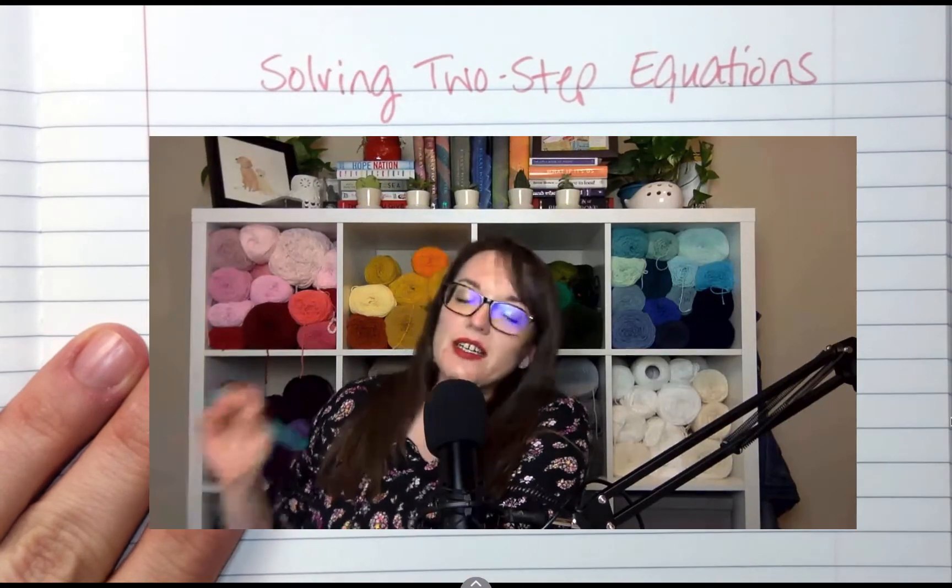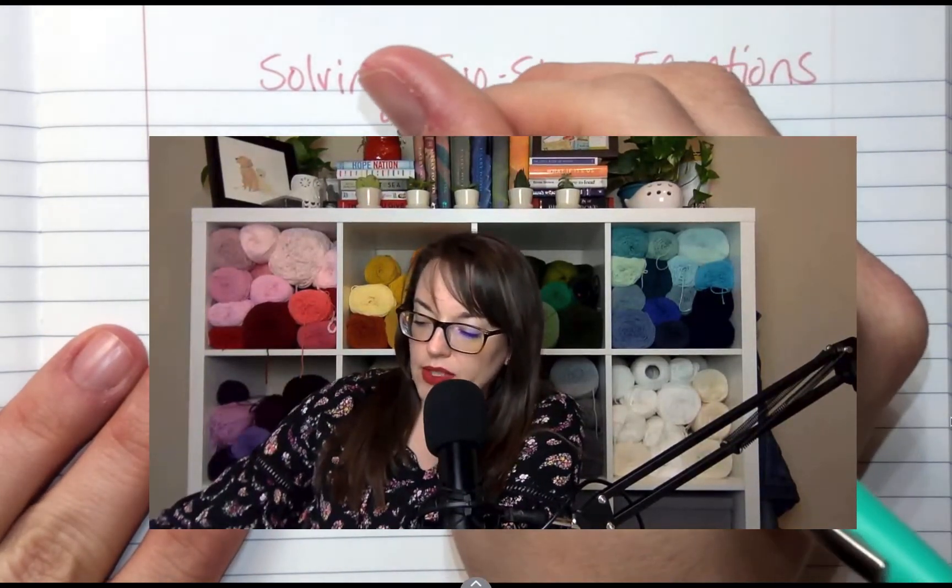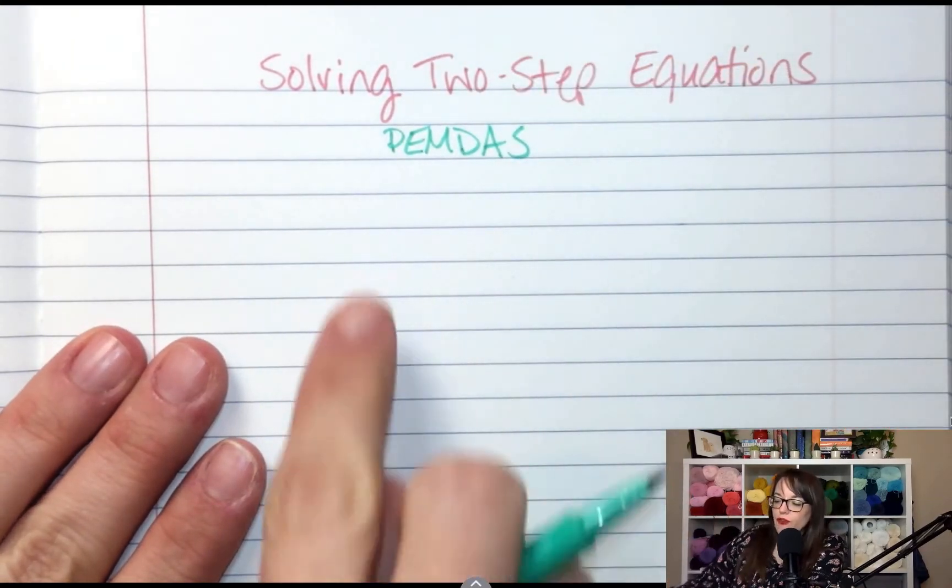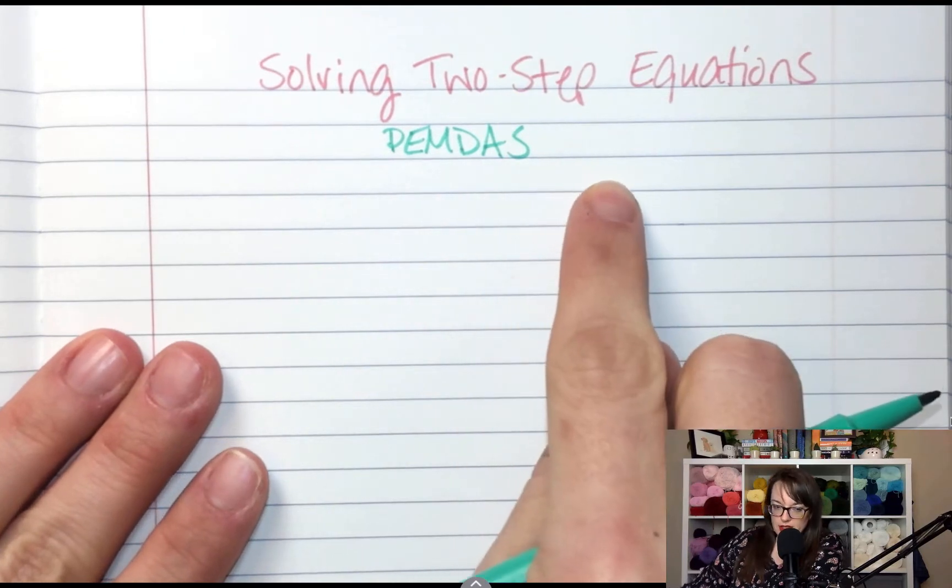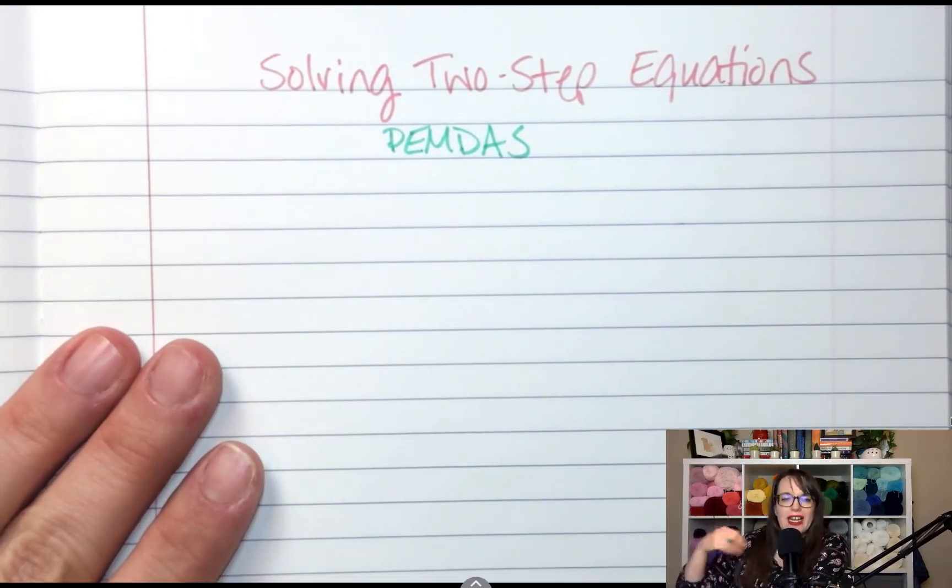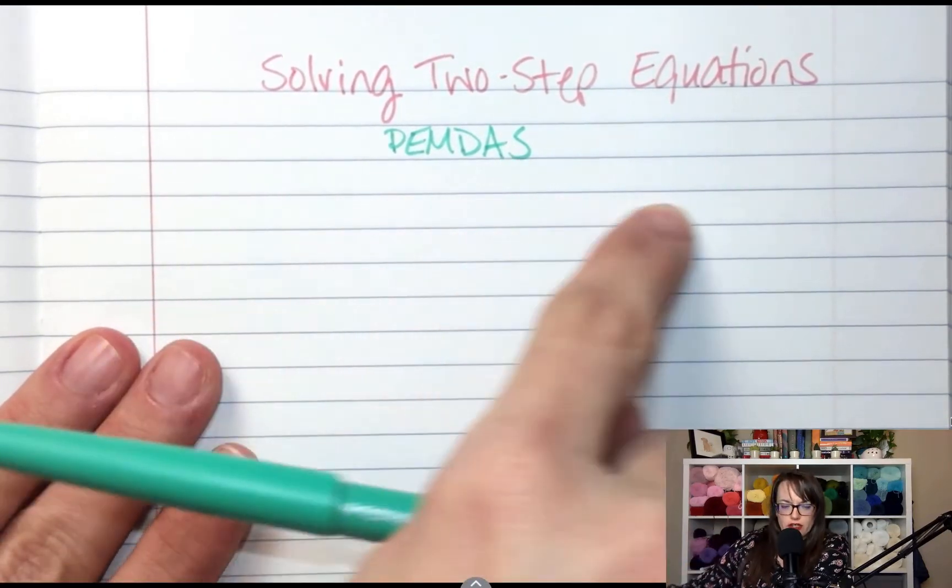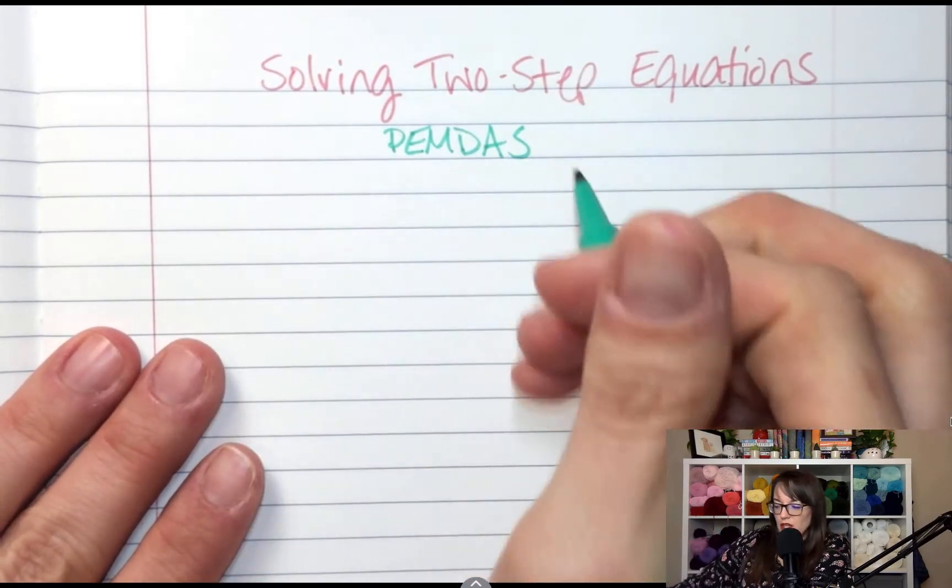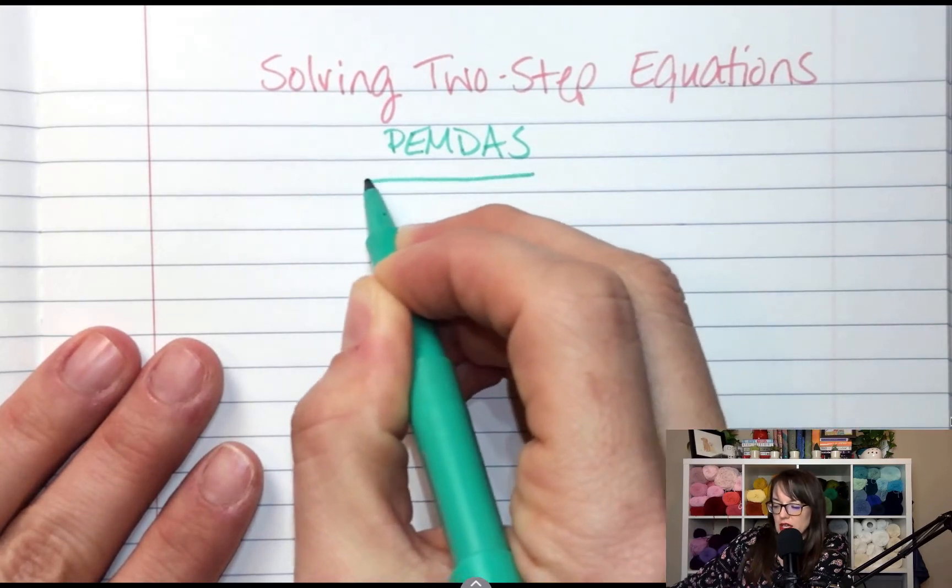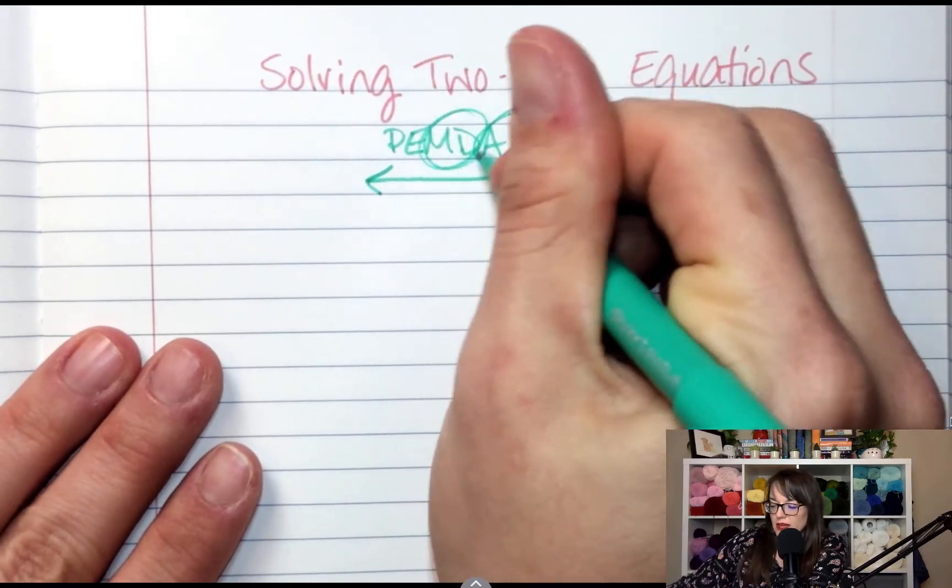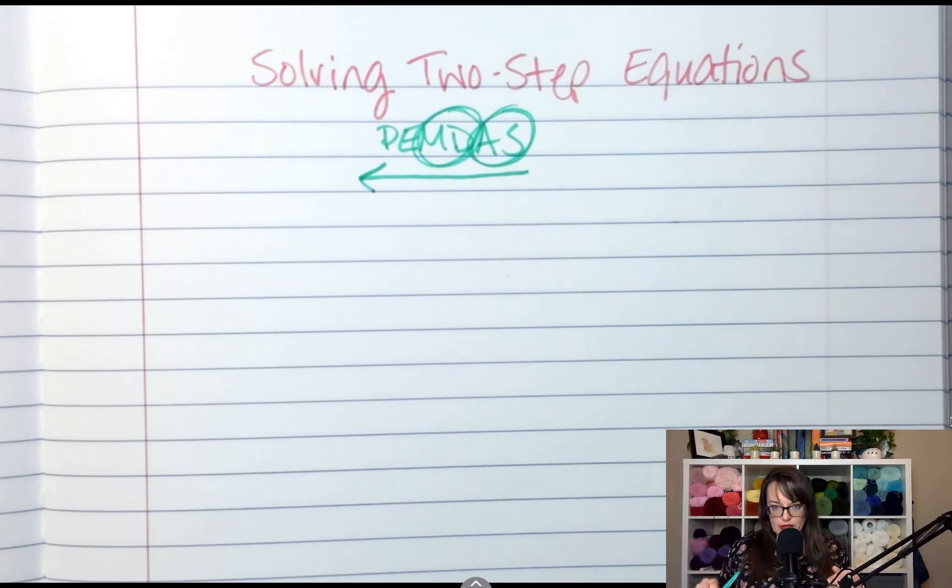So the idea of solving equations is working backwards. When we work forward, we follow the order of operations. I like to think of it as tying a knot. When you tie your shoes, you go forward, you follow your steps forwards. But if you wanted to untie that knot, you would go backwards. Don't forget that adding and subtracting, multiplying and dividing, are on the same level of importance. So we're going to treat them equally going backwards.